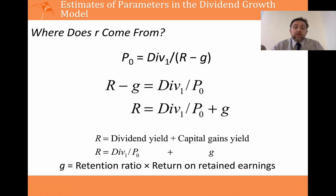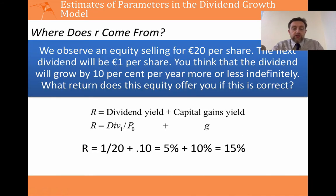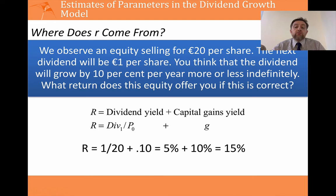The return that an investor gets — the discount rate on equity — is a function of two components: the dividend yield and the capital gains yield. The higher the growth in the company's earnings, the higher the return an investor will expect. For example: an equity selling for 20 euros, with a next dividend of 1 euro, expected to grow by 10% per annum forever. The dividend yield is 1 divided by 20, which is 5%, plus the capital gains yield of 10%, giving a total return of 15%.